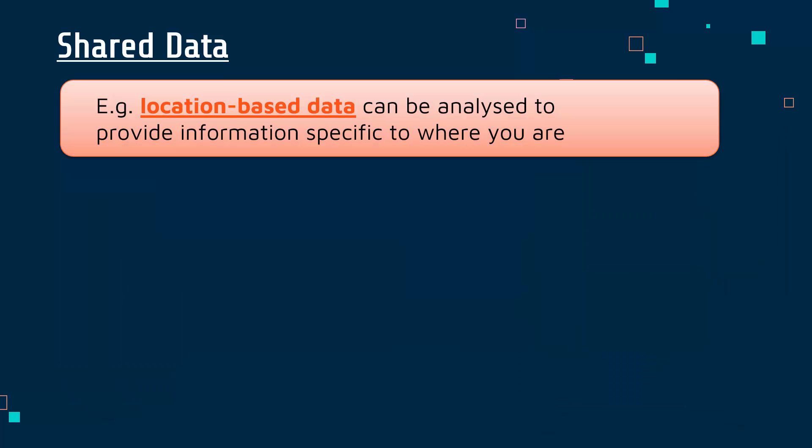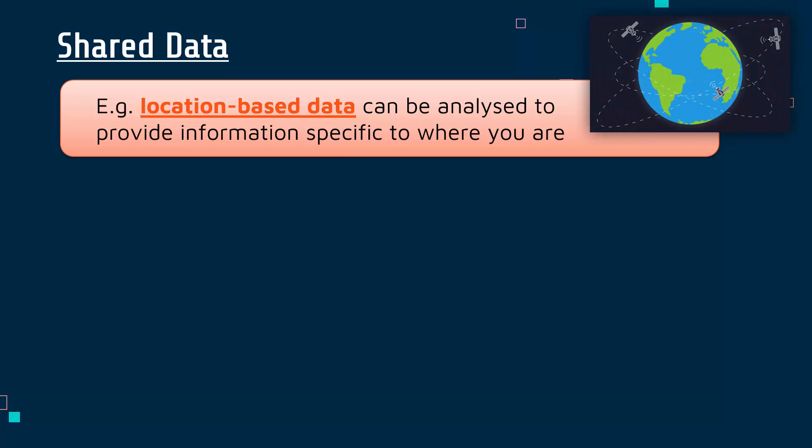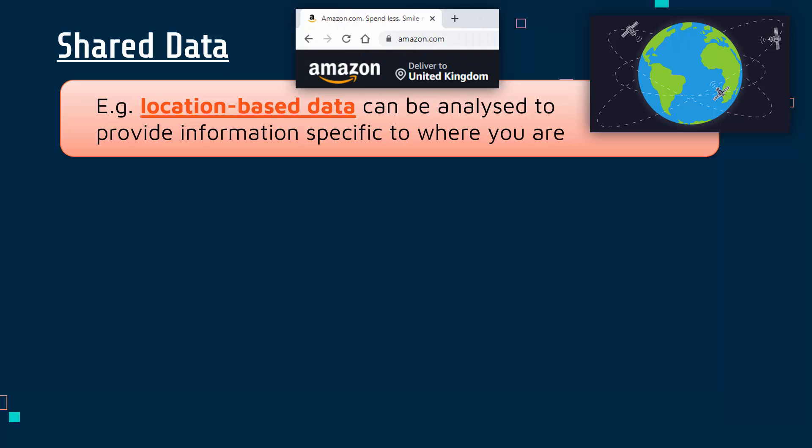Another couple of quicker examples of data which might get collected include location-based data — information about where you are actually located. An app might use GPS to give you specific recommendations based on where you are. Your IP address also tells a website where you are located, at least in terms of your country. For example, if I go to Amazon.com, the American version, it says — without me even doing anything — to deliver to the UK, because it can see I've got an IP address based in the UK. This allows a slightly more personalised feel and potentially speeds things up, but equally you might feel uncomfortable if you feel like you're being tracked with GPS or your cellular data.